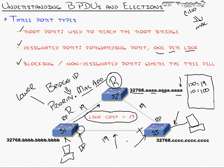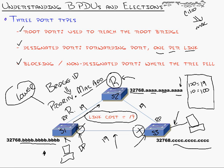The bridge ID determines which side of a redundant link gets blocked — lower is always better in Spanning Tree. The switch with the lower bridge ID keeps its port forwarding as the designated port; the switch with the higher bridge ID blocks its port. So Switch 3, having a higher bridge ID than Switch 2, blocks its link and effectively takes that redundant path down. If any active link ever fails, Spanning Tree recognizes it and unblocks the previously blocked link to restore connectivity.